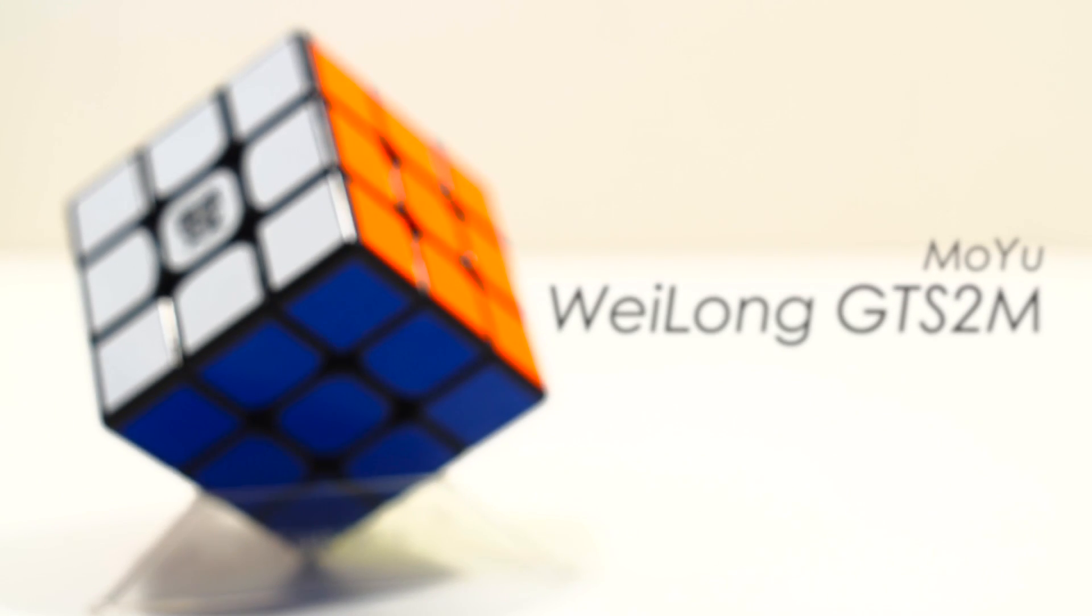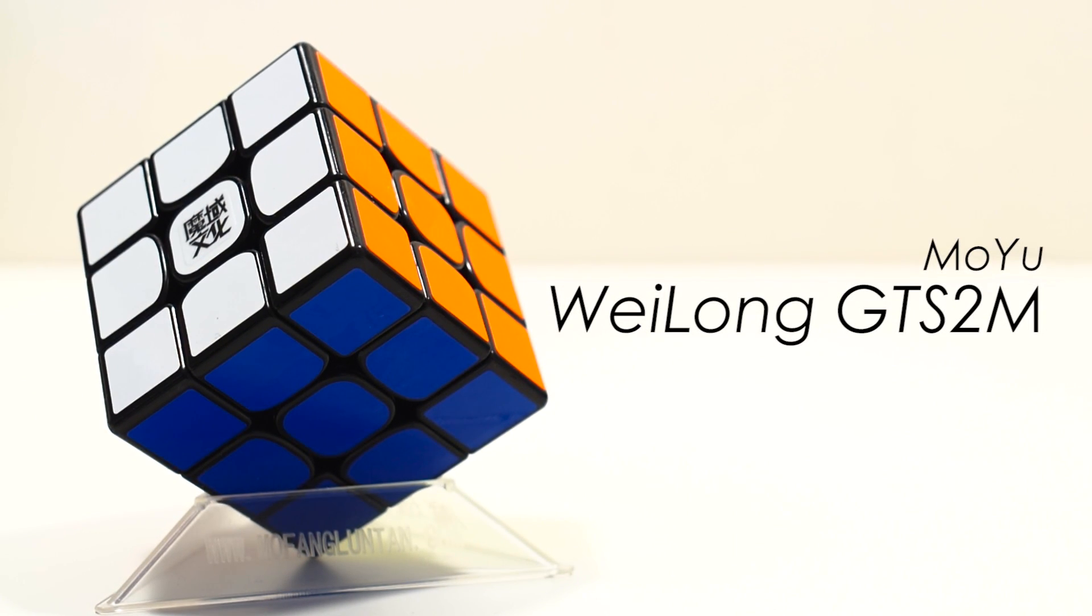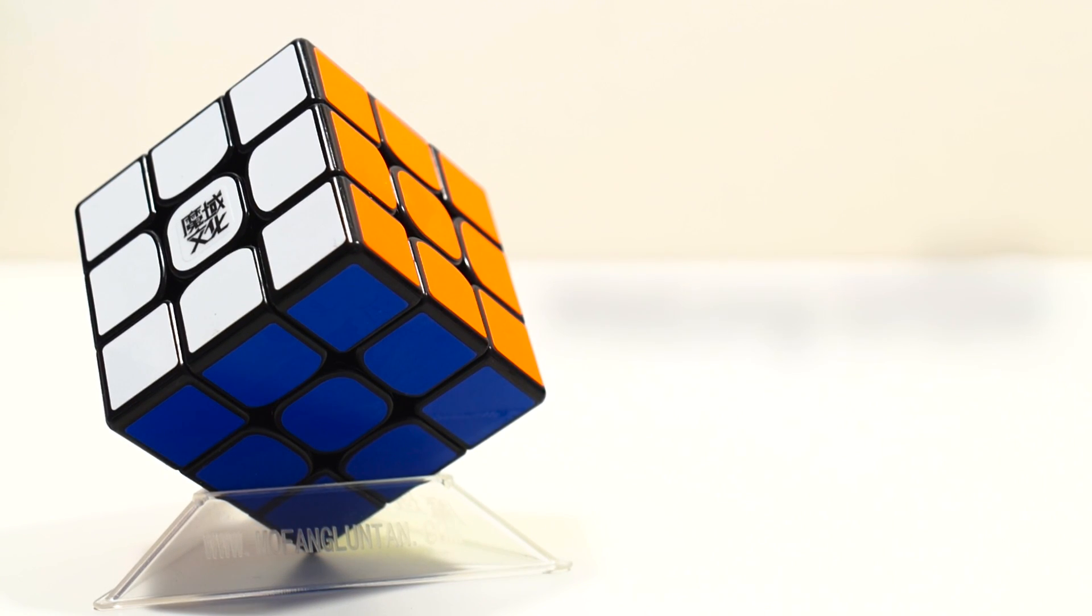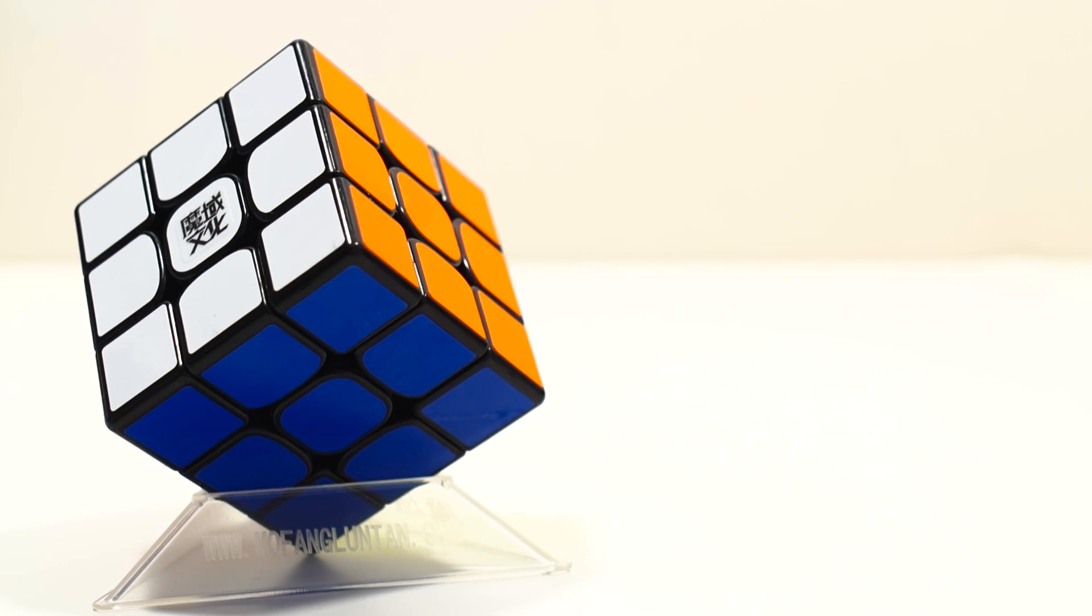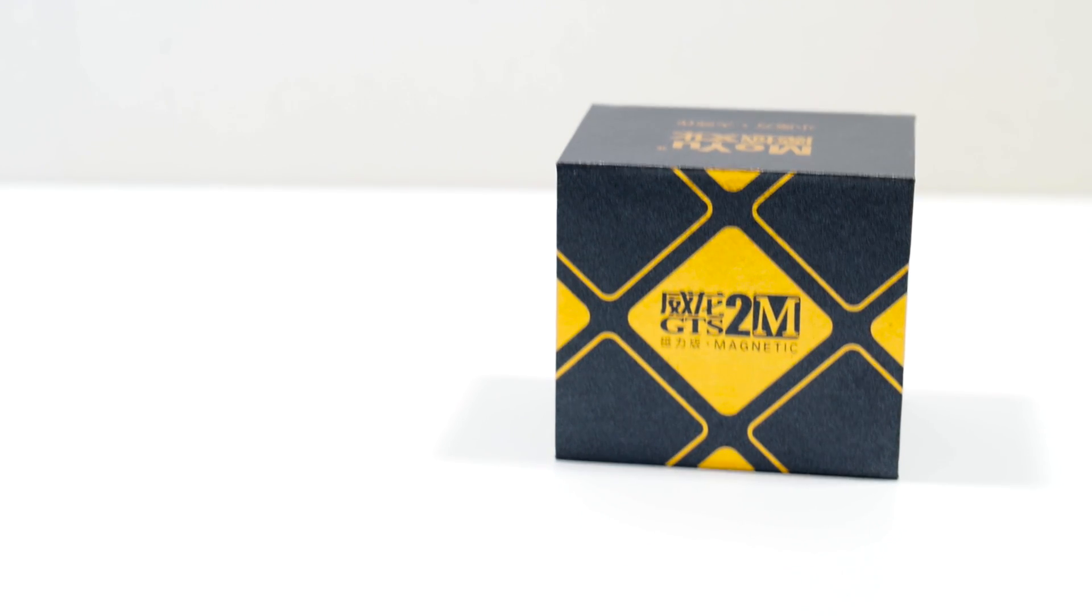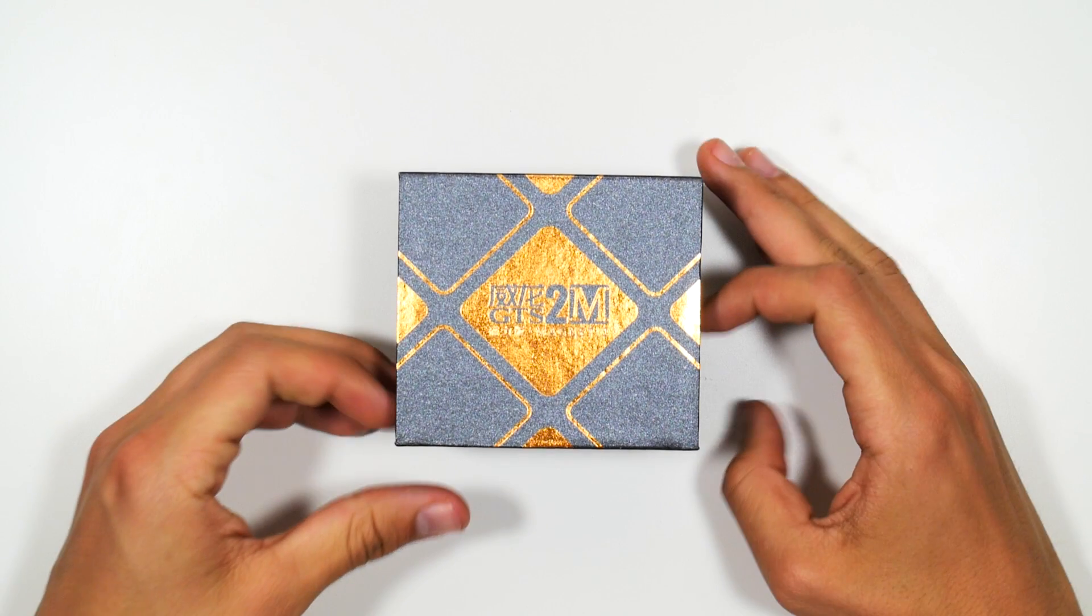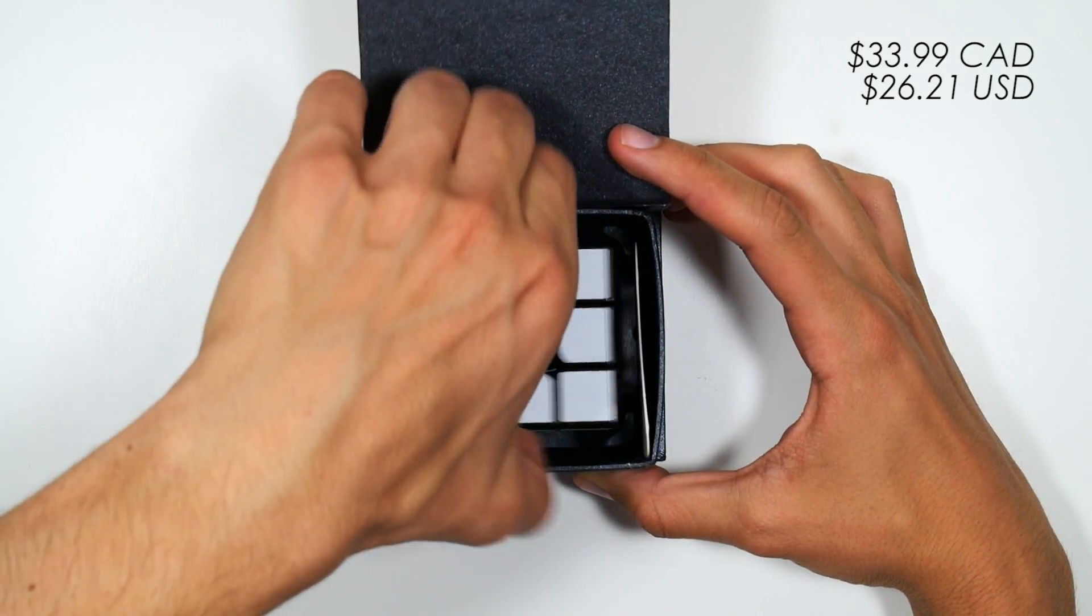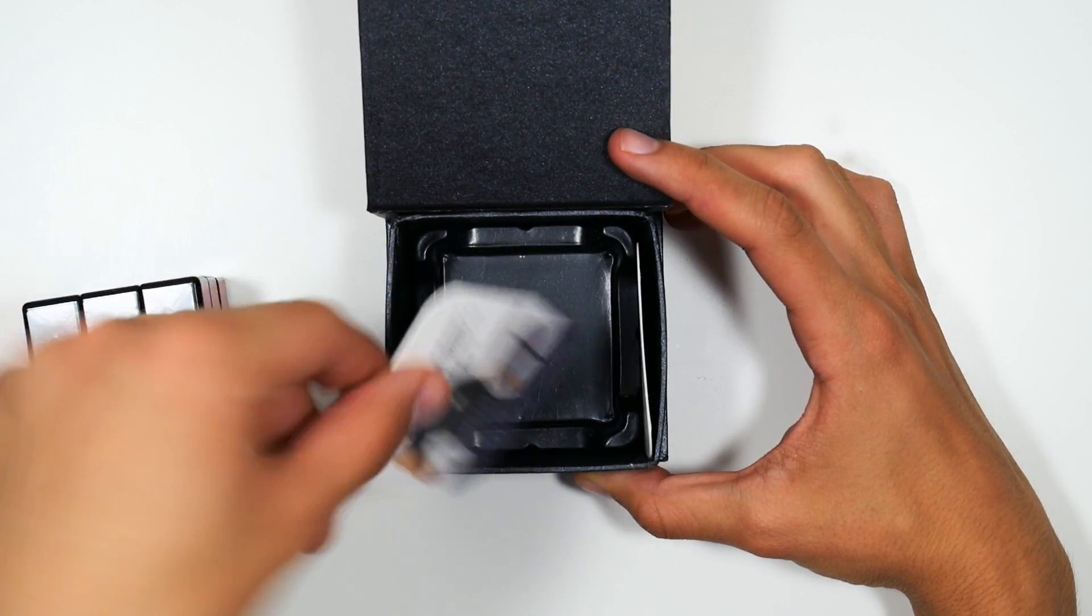Next up we have MoYu's flagship puzzle, the MoYu Weilong GTS-2M. This is one of those puzzles that pretty much everyone agrees is pretty decent, if not their main. It comes in a very premium box and was one of the first to introduce the magnetic clip. It comes in at $34 Canadian or around $26 USD, so it's definitely up there in price.